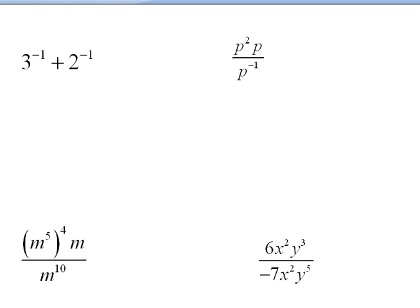A couple more here really quickly. We have 3 to the negative 1 plus 2 to the negative 1. So, here again, our negative exponents only on those numbers. So, this tells us that this is in the wrong position. Rather than 3 over 1, we need to correct that by making it 1/3.